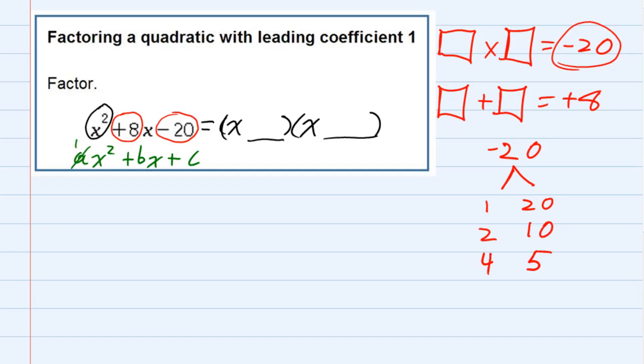Now in order to get a negative 20 though, the signs on these have to be different. So different signs - I've written them here as positives, but they have to be different signs. And remember the other part is that they have to add up to positive 8.